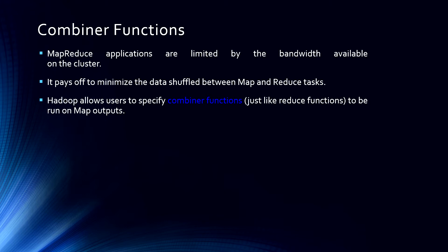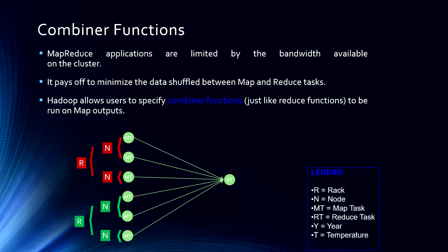So a combiner is combining different outputs — it's like a reduce task. Suppose we have a rack R with nodes: node 1 and node 2, and rack 2 also has node 1 and node 2. We first run a map task. For example, if we are counting the number of apples in a fruit basket using a MapReduce task, the map task would produce: apple 1, orange 1, apple 1, orange 1, pineapple 1, and so on. So we mapped our tasks.